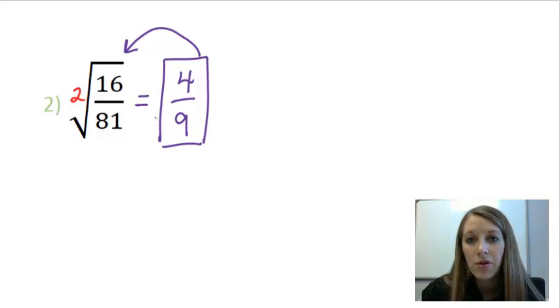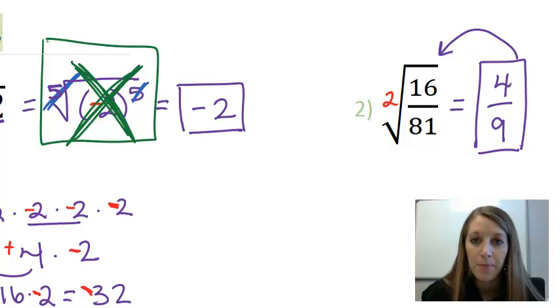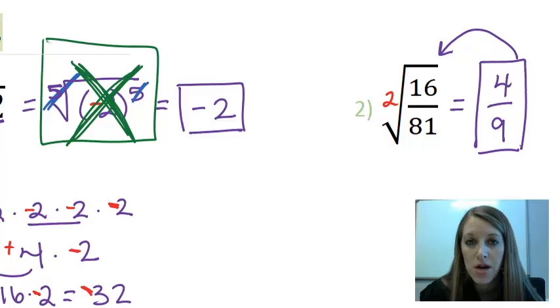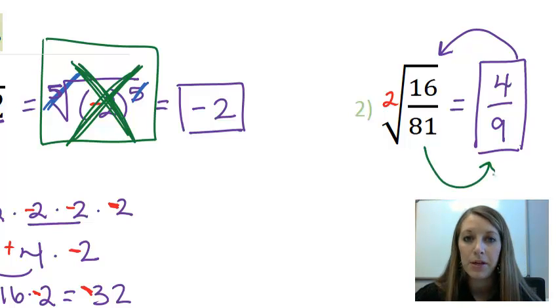You can see that I have the right answer. And notice, just like I said before, I skipped this step in between. I didn't write out the step where it's four over nine to the second power, and then that cancels out with my root. So, if you can, try and skip that step in between.